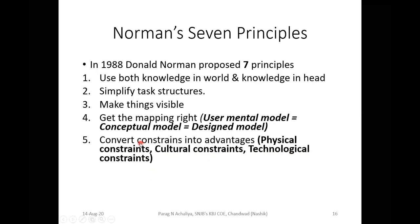You need to consider and convert physical, cultural, and technological constraints into advantages. Instead, these constraints are often taken as disadvantages — for example, mobile battery being down, no charging, no net connectivity in your area, or net pack finishing after a full day of lectures. These are examples I am quoting for the fifth principle of Norman, which states you need to convert your constraints into advantages.